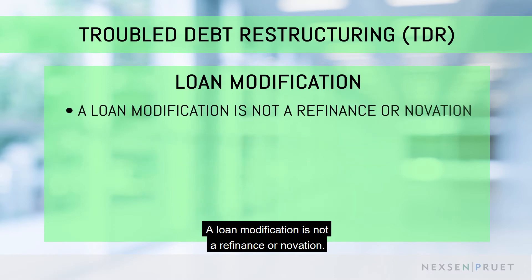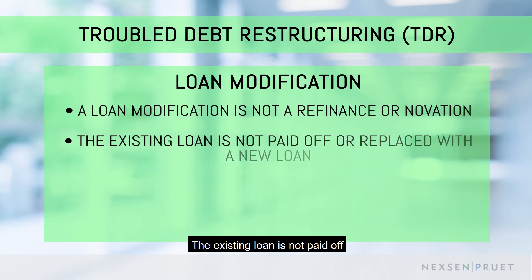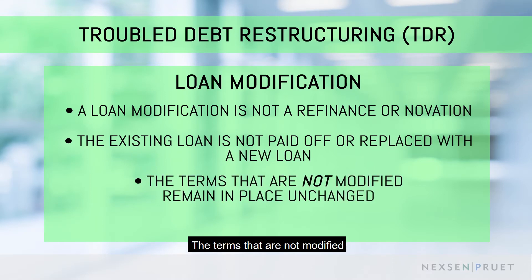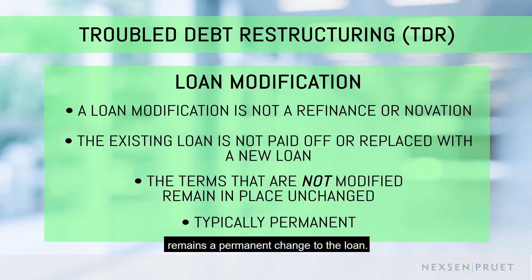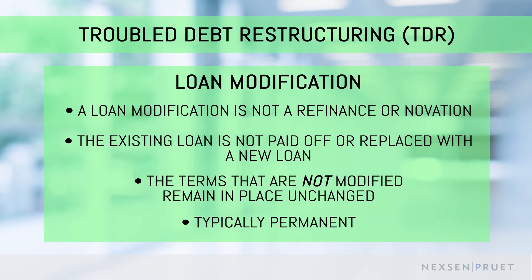A loan modification is not a refinance. The existing loan is not paid off or replaced with a new loan. The terms that are not modified remain in place unchanged. Loan modifications are typically permanent — the term that is modified remains a permanent change to the loan.